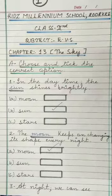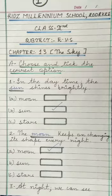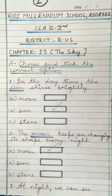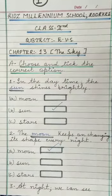Good morning, students of Class 2nd. Today we are going to start the EVS worksheet, Chapter Number 13: The Sky. Let's start.